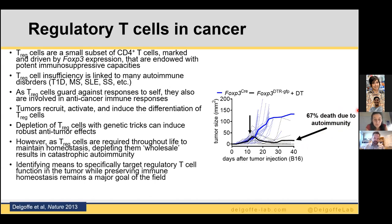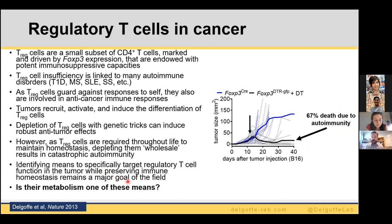A beautiful mouse model made by Sasha Rudensky — a 3' UTR insertion of the diphtheria toxin receptor — allows wholesale depletion of Tregs using diphtheria toxin. When we deplete Tregs with DT, tumors completely vanish. But the dirty little secret is that two-thirds of the mice die from autoimmunity. You can't get rid of Tregs wholesale because you need them throughout life. You have to find smarter ways to preserve their homeostatic function while targeting their function specifically in the tumor microenvironment.